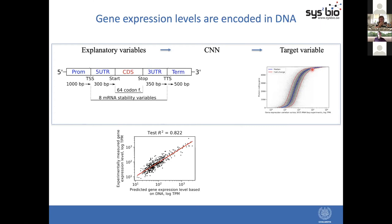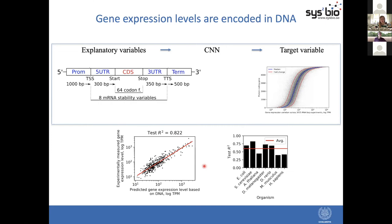First we built models with data from yeast — Saccharomyces cerevisiae — and with this we obtained models that could explain over 82% of the variation of gene expression levels in the testing dataset. We then built models and performed all this data parsing and model training with model organisms spanning from bacteria to humans — a wide range of different genomic and regulatory complexities. On average, 60% of the variation of gene expression levels is explained by these models across all these different model organisms.